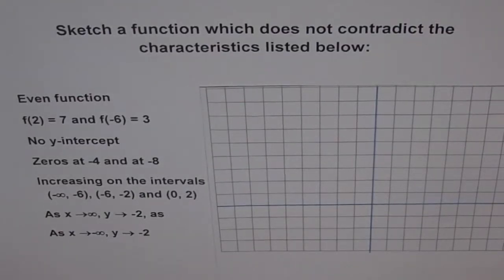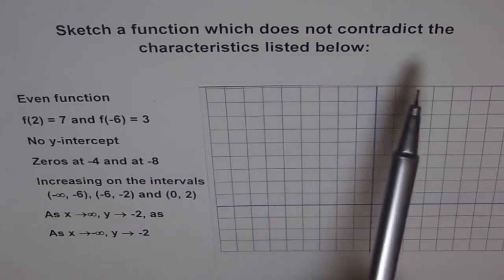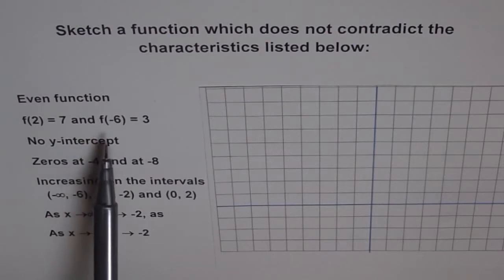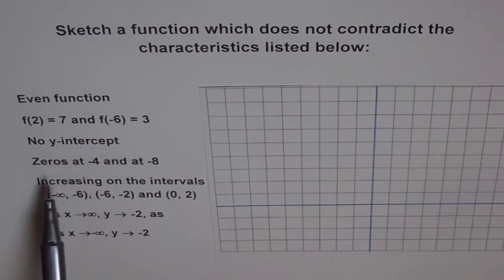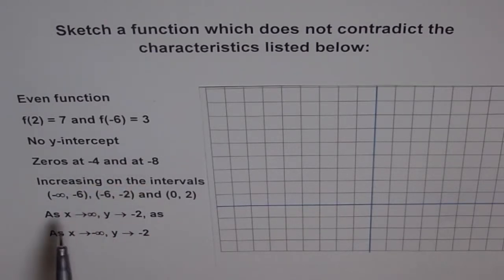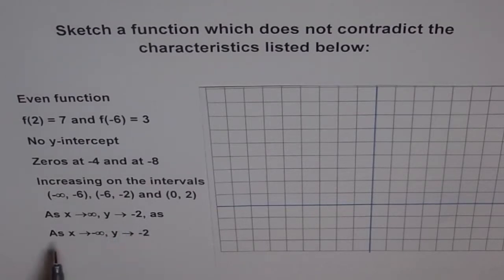Here is a very interesting problem — we need to sketch a function from given conditions. The problem says: sketch a function which does not contradict the characteristics listed below. First, it's an even function. f(2) = 7, f(-6) = 3, no y-intercepts, zeros at -4 and -8, increasing on the intervals (-∞, -6), (-6, -2), and (0, 2). As x approaches positive or negative infinity, y approaches -2.